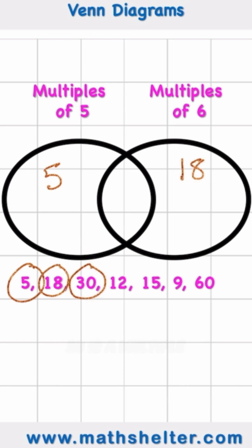Then I have the number 30. Well, 30 is a multiple of 5 and a multiple of 6, so 30 will go in the shared category in the middle. Then I have 12. Well, 12 is not a multiple of 5, it's a multiple of 6, it's going to go on its own here.